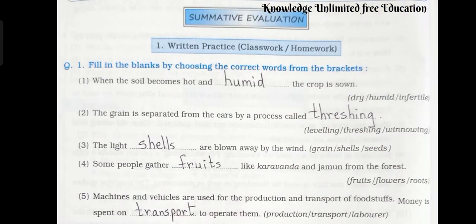Question number 1. Fill in the blanks by choosing the correct words from the bracket. Number 1: When the soil becomes hot and dry, the crop is sown. Number 2: The grain is separated from the ears by a process called threshing. Number 3: The light chaff is blown away by the wind.